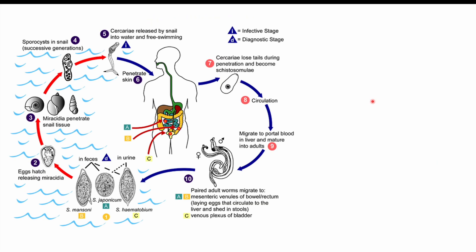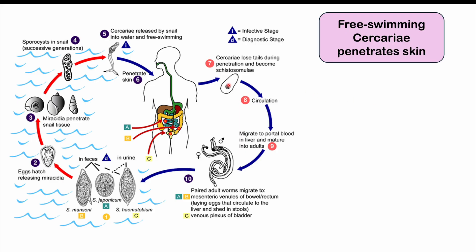Individuals get infected with Schistosoma hematobium through exposure to a water source contaminated with these parasites — either through contaminated drinking water or by entering a water source containing them. At first, we encounter what we call free-swimming cercariae. This is the independent parasite, independent of a host. Originally, the parasite would have come from a snail. Cercariae come from a snail, swim through the water, and if a person enters that water source with any exposed skin, the cercariae can swim toward and penetrate their skin.